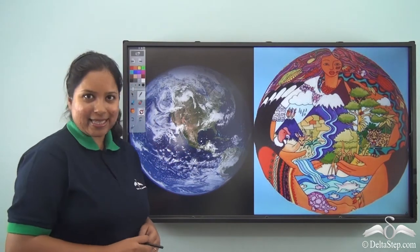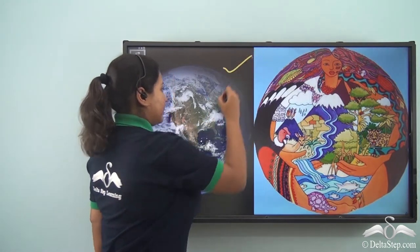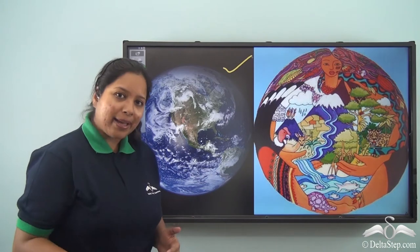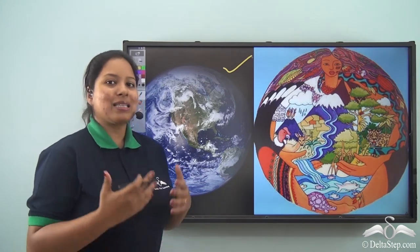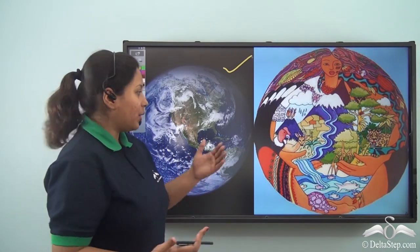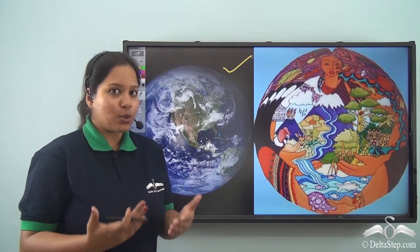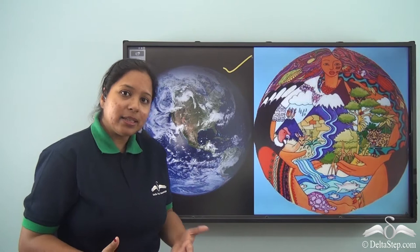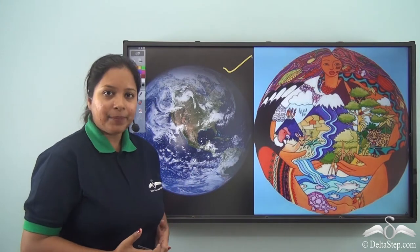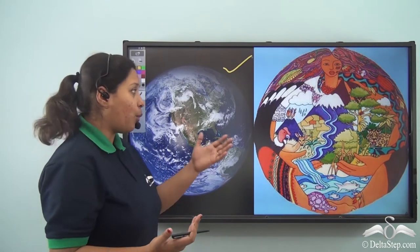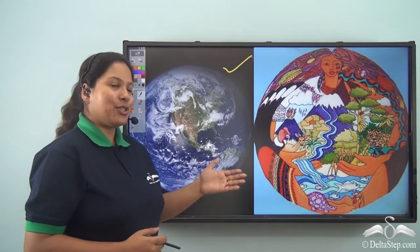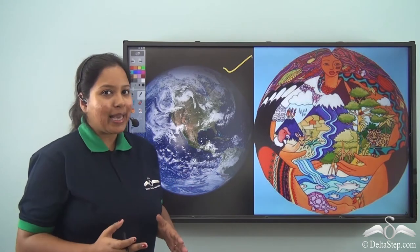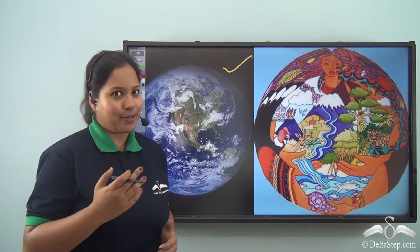Over here we can see our mother Earth. Isn't she beautiful? Of course she is. Just imagine how would we keep ourselves safe in our shelter if it had not provided the soil on which the houses are built. How would we even breathe if the atmosphere was not there? And what would we drink if the water was not there? Mother nature provides us everything and it makes sure that we have everything to be comfortable.